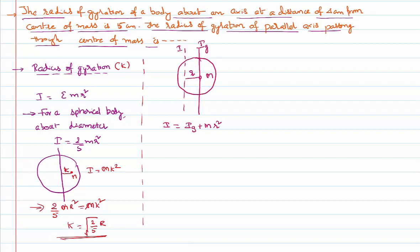Now I can write this in terms of radius of gyration. I write I as mk², and Ig as mkg², where kg is the radius of gyration from the axis passing through the center of gravity, and k is the radius of gyration from the parallel axis at distance r. Substituting: mk² = mkg² + mr². All the m's cancel, giving k² = kg² + r².